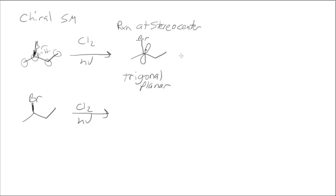So if that's trigonal planar, and then next we react with our chlorine radical, the chlorine radical can either come from the front or the back. So we get the chlorine radical coming from the back in one case and the chlorine radical coming from the front in the other case.